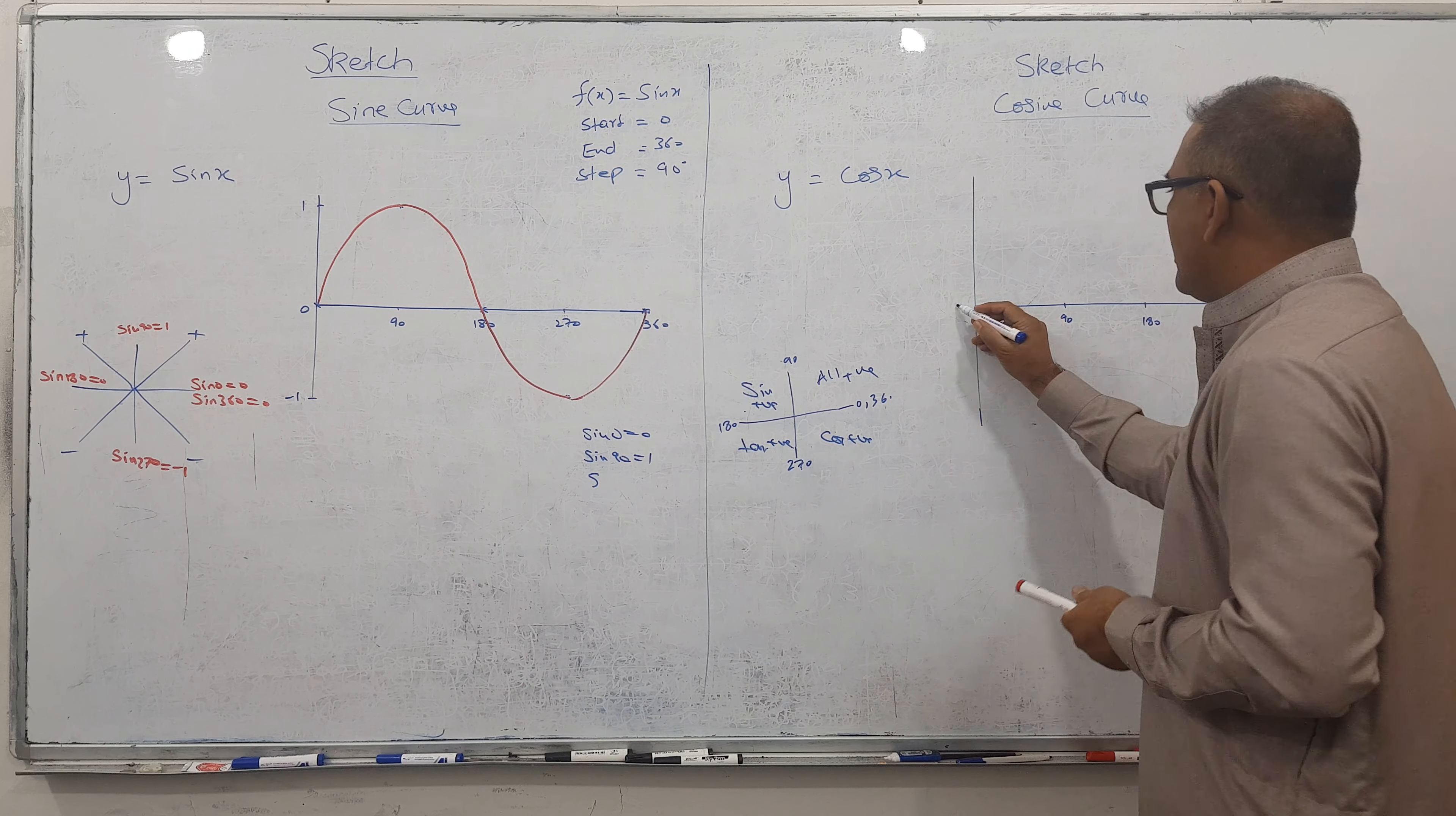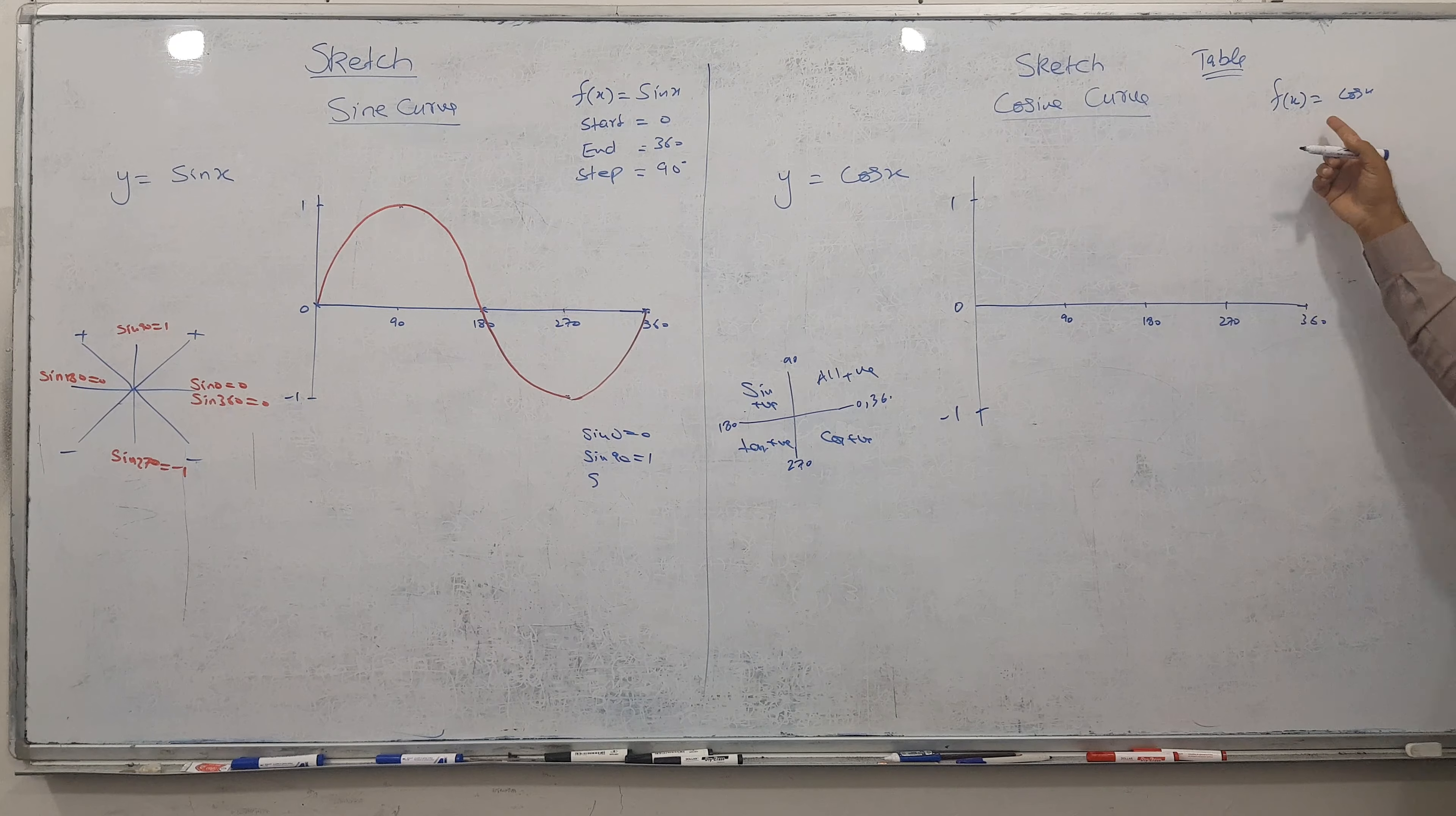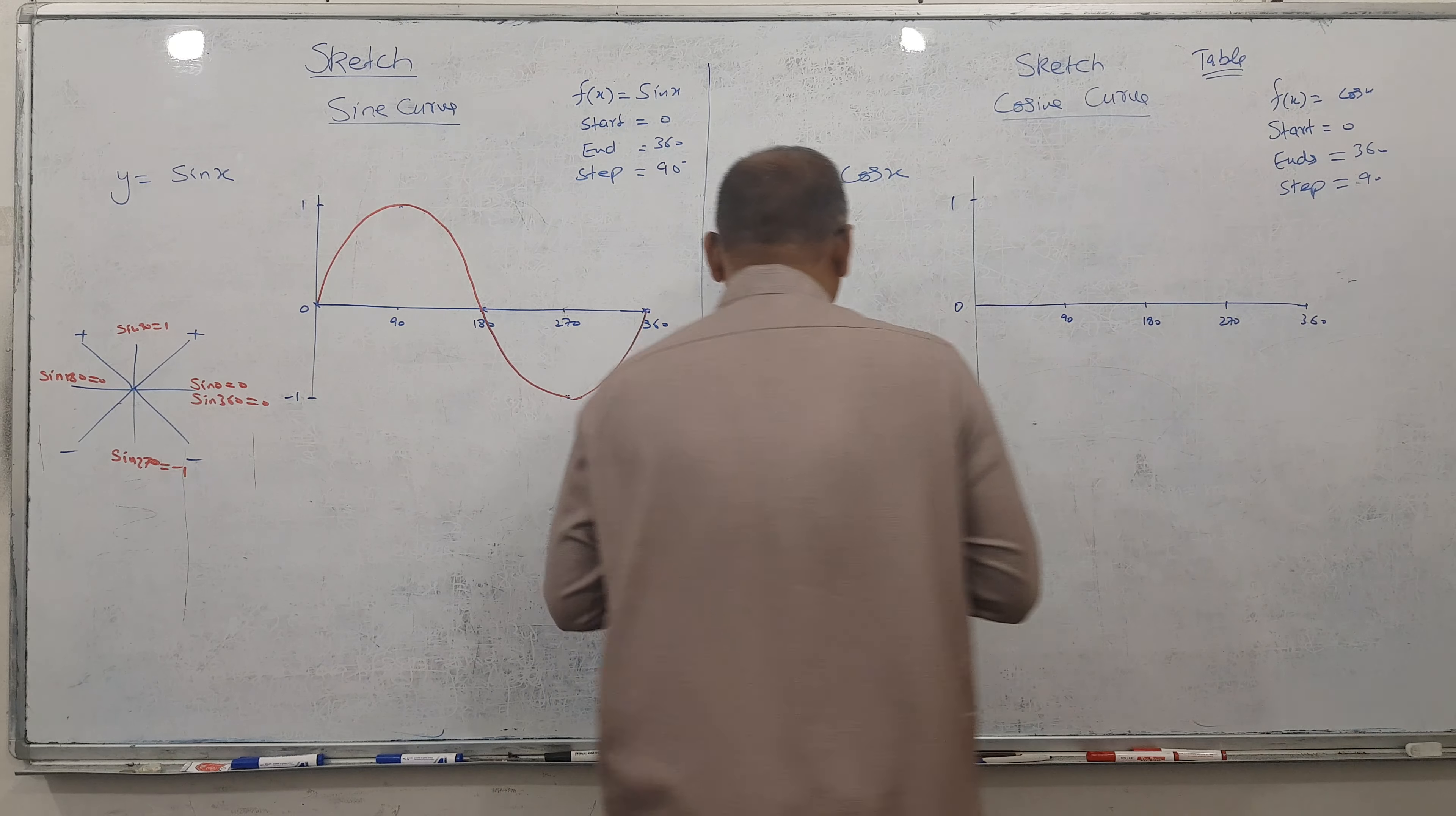So what about cosine? Here 0, here 1, and here we have minus 1. Same here. f(x) equals what? Cos x. And you have the calculator table function. When you press it, it will ask you to write a function. You write the function. It will ask start from where? Start from 0. It asks you ends where? End 360 degrees. How much step? Step is 90. And see here at 0.